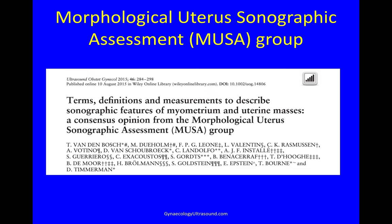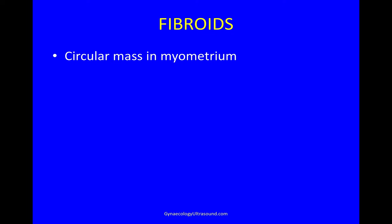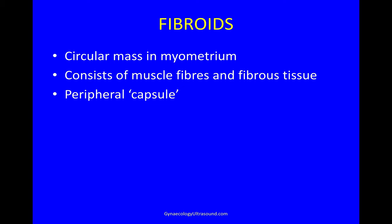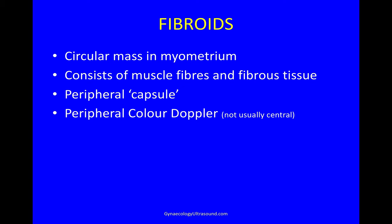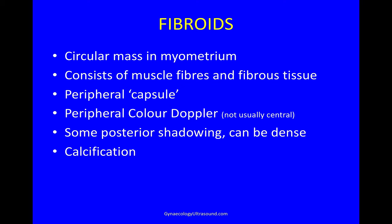Fibroids are a circular mass in the myometrium consisting of muscle fibers and fibrous tissue with a peripheral capsule. You'll find some peripheral colour Doppler flow, not usually central though it's not impossible, and some posterior shadowing which can be dense. There's often calcification in fibroids and where there's one there's often others, so do look around for other fibroids.